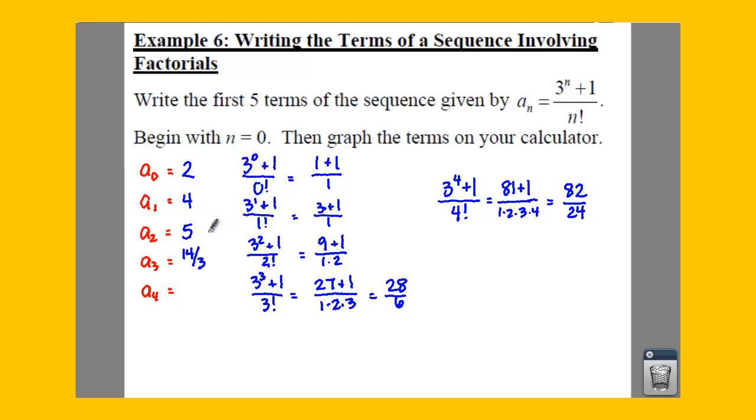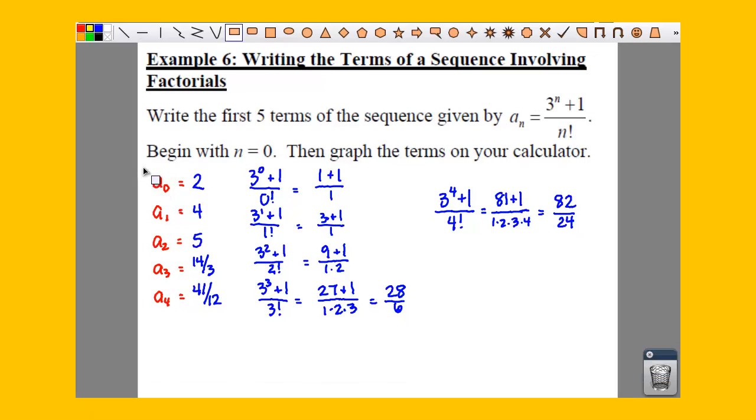So that is 82 divided by 24. And if you reduce that all the way, all you can do is divide that by 2, which gives you 41 over 12. So that's how you can use the factorial to help you figure out one of your sequences.